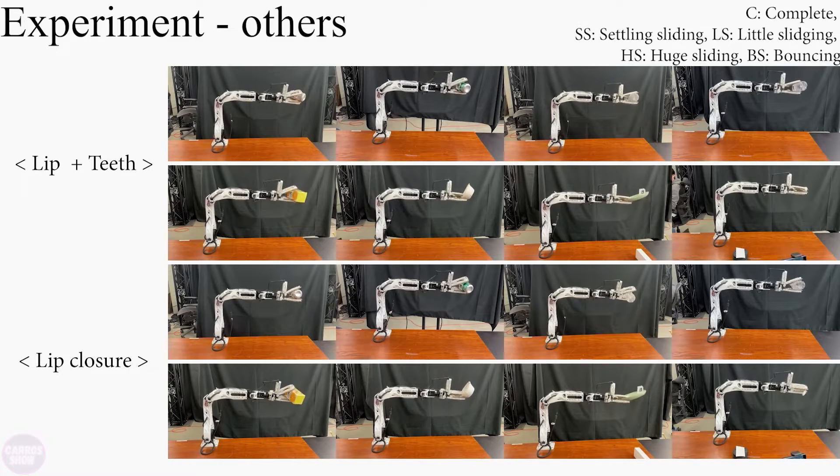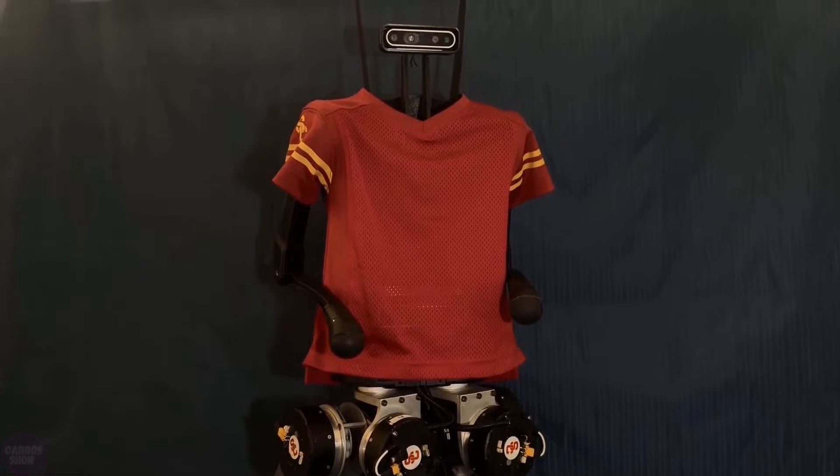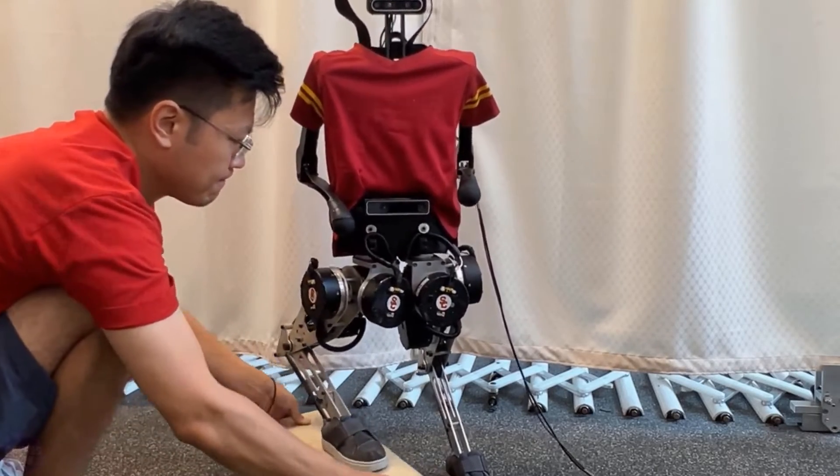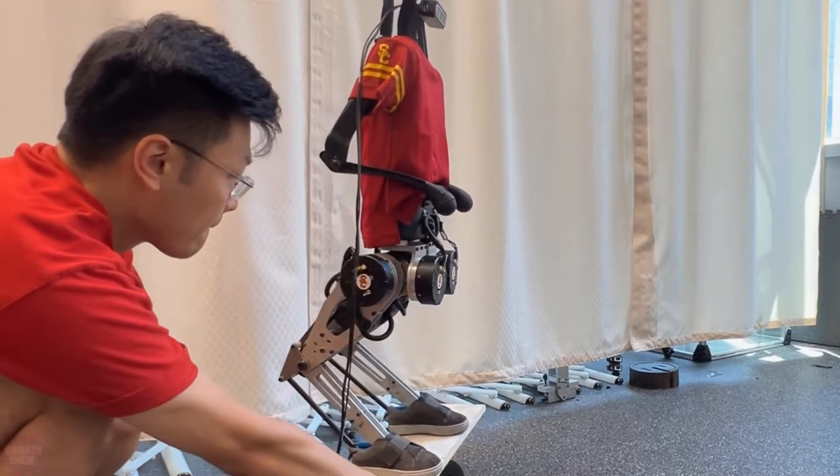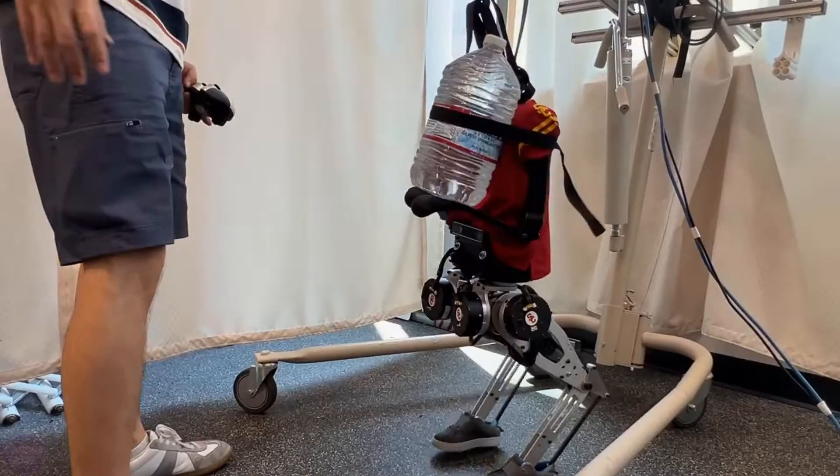Another humanoid robot showcased at the exhibition was Hector, developed by the Dynamic Robotics Laboratory and Control at the University of Southern California. This robot is open source and designed to be an economical, compact, and powerful hardware platform for a wide range of humanoid robot developers.